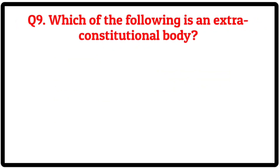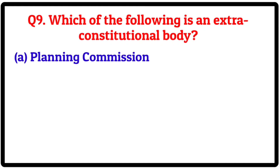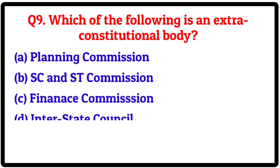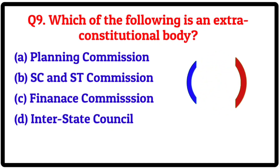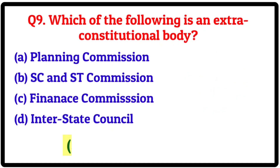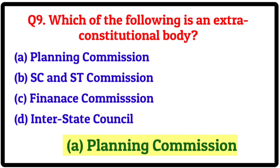Question 9. Which of the following is an extra-constitutional body? Option A: Planning Commission. B: SC and SD Commission. C: Finance Commission. D: Interstate Council. Correct answer is A: Planning Commission.